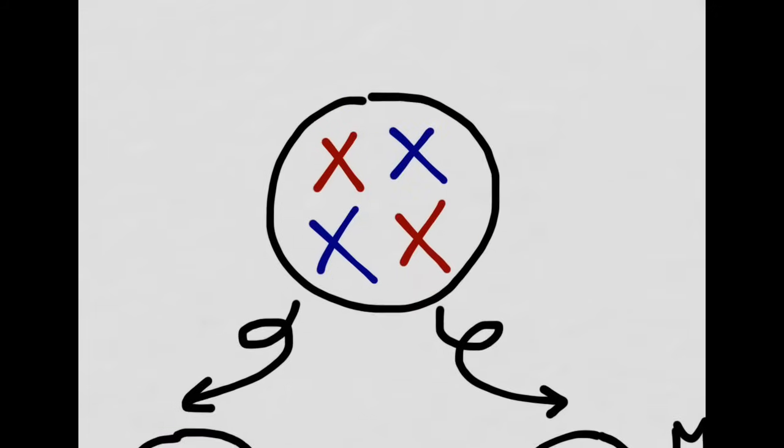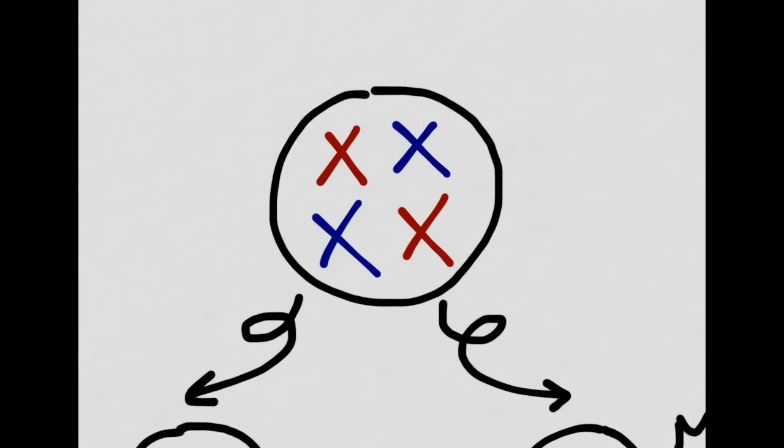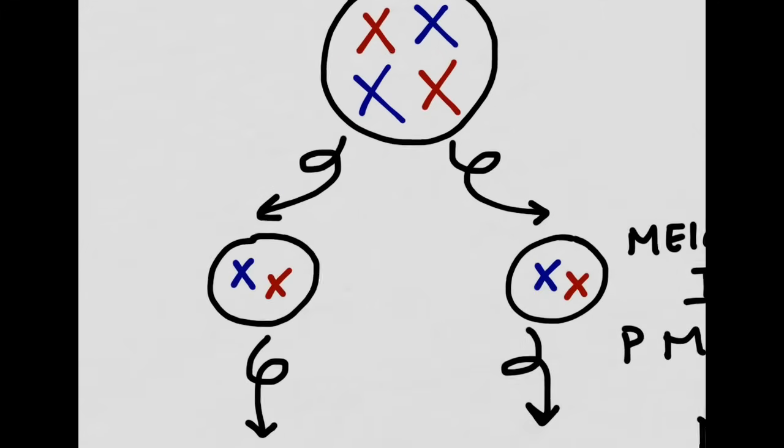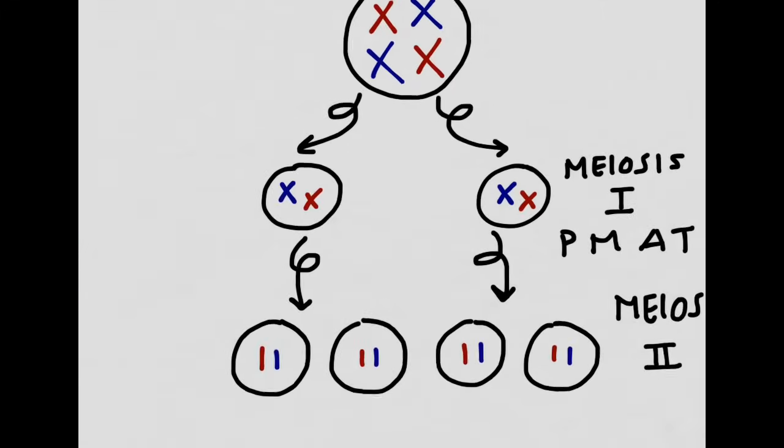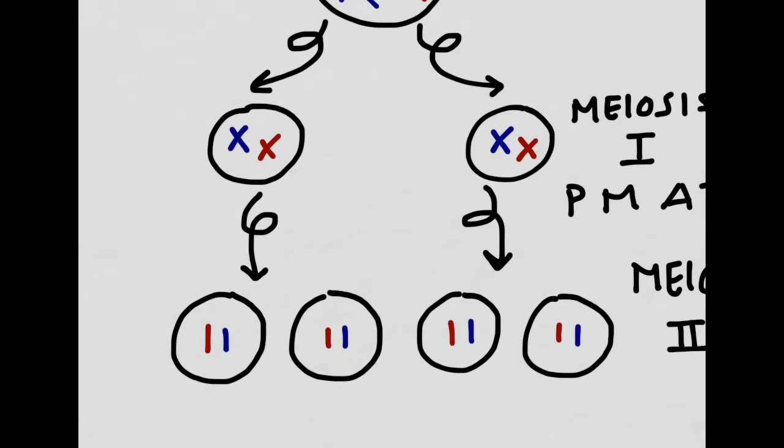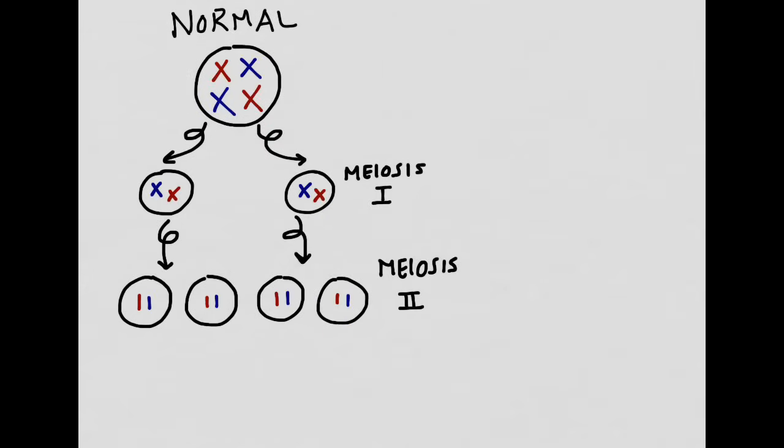So we go from having a parent cell that looks like this, with two red chromosomes and two blue chromosomes, to having four daughter cells, each of which have one red and one blue chromatid. This is what happens in normal cell division. However, we're now going to take a look at what happens when it goes abnormally.